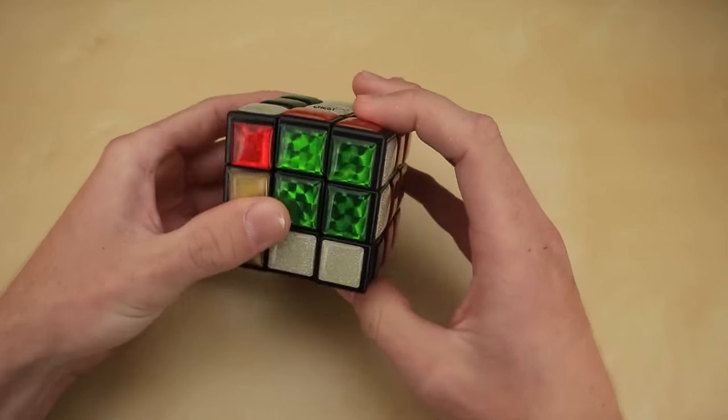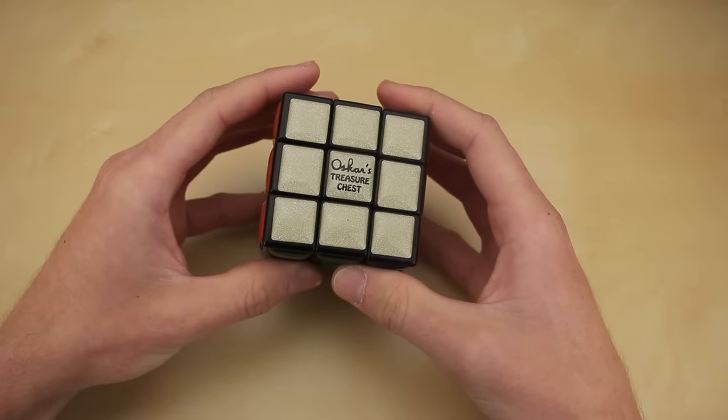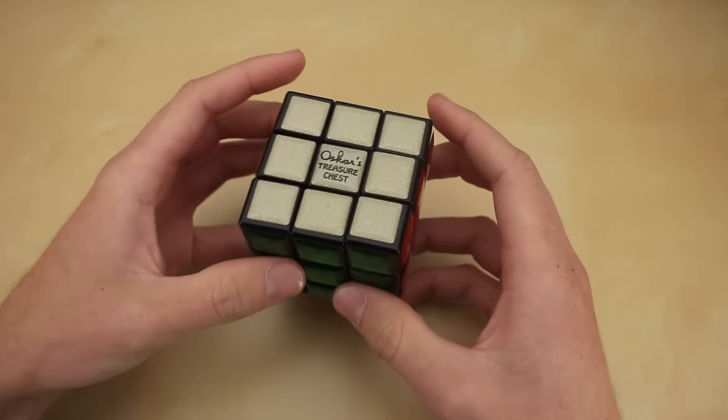I mean, there's 43 quintillion different scrambles on a Rubik's Cube, so if you just used a random one, there'd be no way for anybody to ever guess your combination.